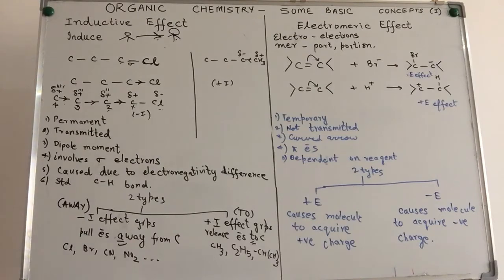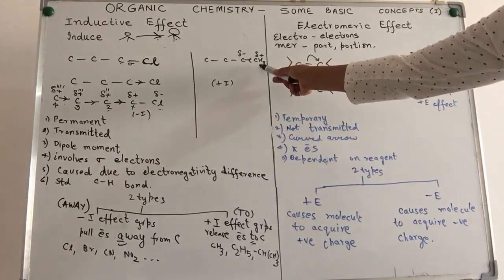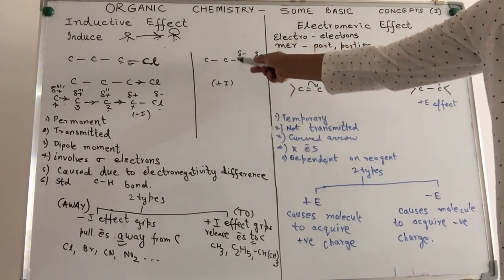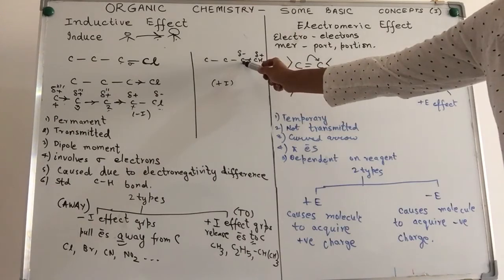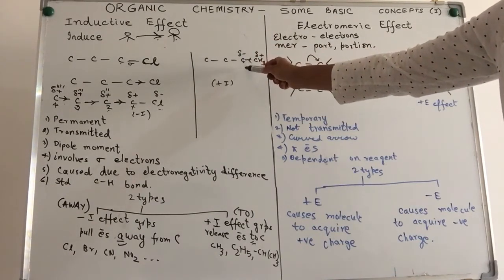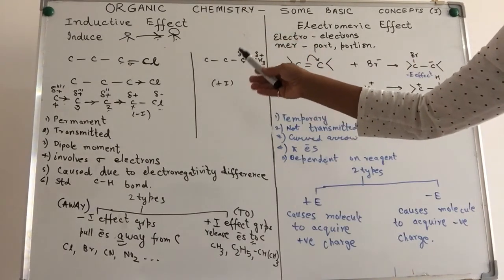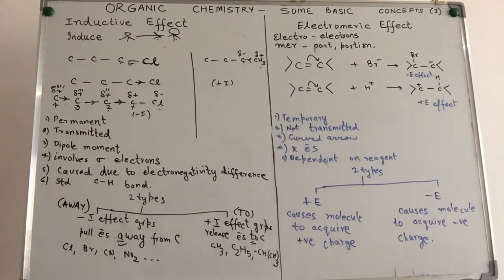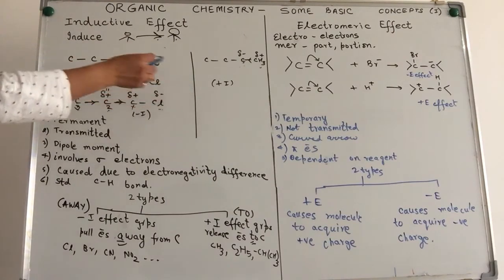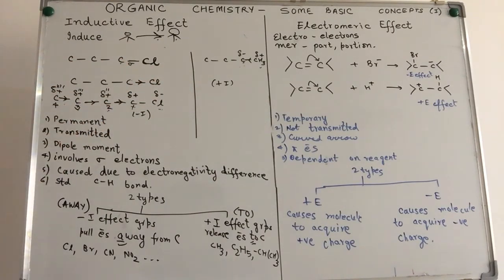Similar behavior can happen in the reverse direction as well. The methyl group actually has a tendency to give electrons towards the carbon, so the carbon acquires a slightly negative charge. This effect is what we call the inductive effect — due to the presence of an atom or a group of atoms, movement of sigma electrons takes place either towards or away from the carbon atom. This involves sigma electrons and is transmitted along the chain.